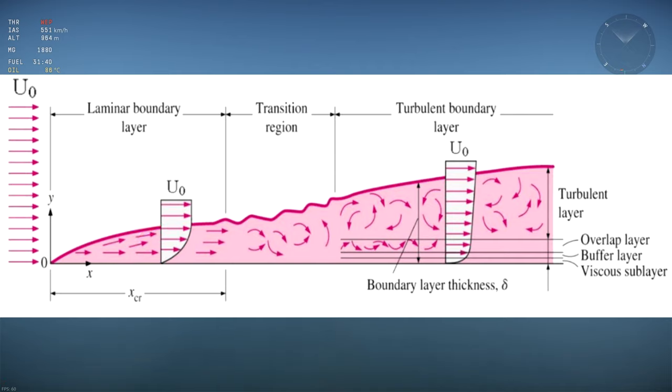Skin friction drag is proportional to how quickly speed increases as you move away from the wall. It's basically a measure of how much the air rubs against the wall, just like how the honey rubs against the knife, creating skin friction drag.